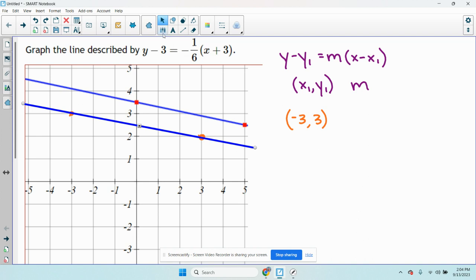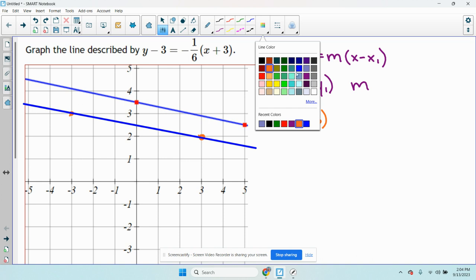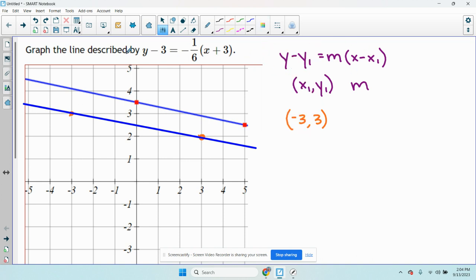Now if you don't like doing it that way, that's fine. You can get it to also look like slope intercept form. So I'm going to get this to look like y equals mx plus b. By doing that, I'm just going to first distribute the negative 1 sixth to both terms.